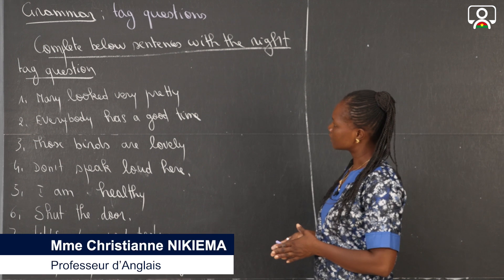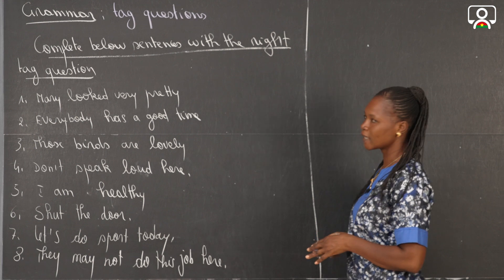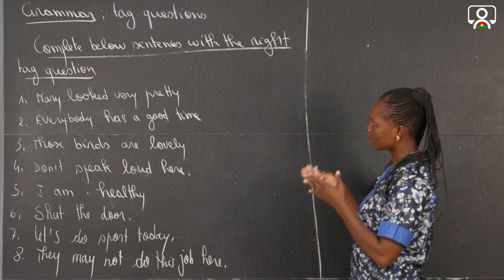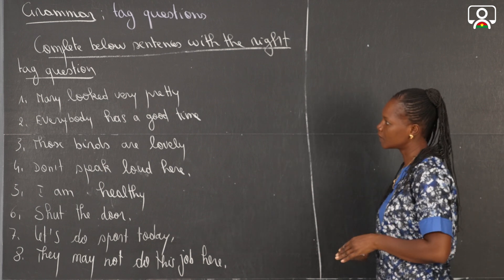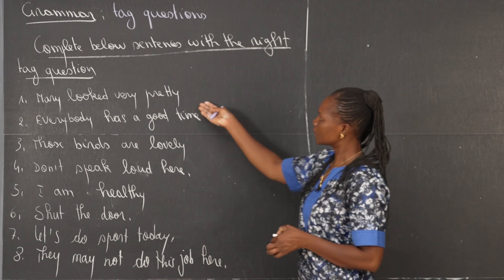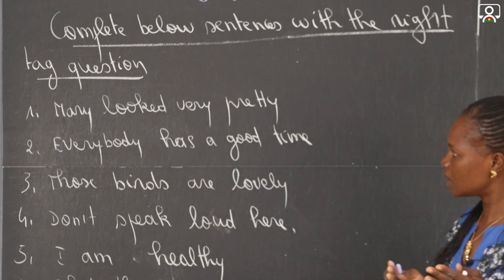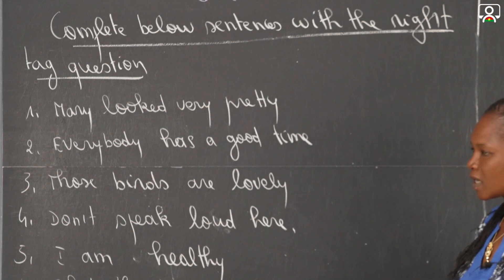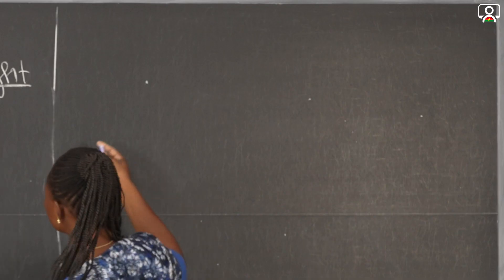Here are sentences that I propose, and now I want you to complete them with the right tag. Remember when it is positive, when it is negative, or when you have an imperative sentence, how to form the tag question. The first sentence is: Mary looked very pretty. So here our sentence is a positive statement and we don't have an auxiliary, we don't have a modal verb. So we are going to use the auxiliary 'to do'.